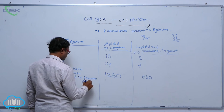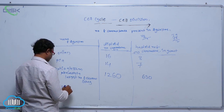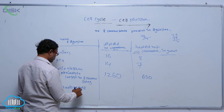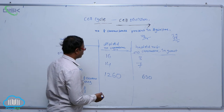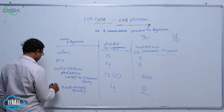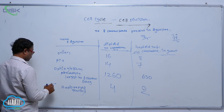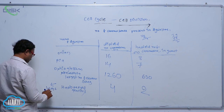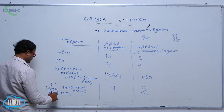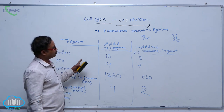After that, Haplopappus gracilis: the diploid number of chromosomes is 4, and the haploid number of chromosomes is 2. So Haplopappus gracilis has the smallest, lowest number of chromosomes among organisms in the plant kingdom.